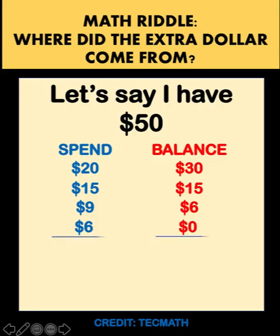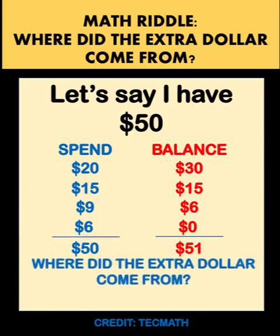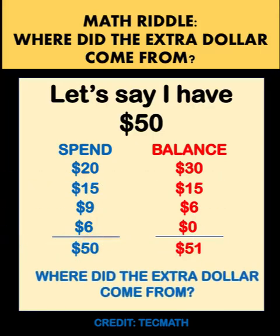If I get the total of each column, 20 plus 15 plus 9 plus 6 gives us $50 for the spend column. And 30 plus 15 plus 6 plus 0 gives us $51. What happened? There is an extra $1 here — where did that extra dollar come from?